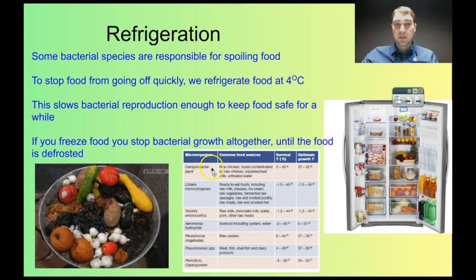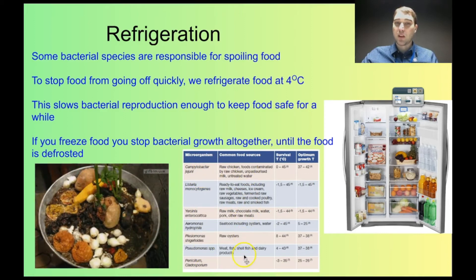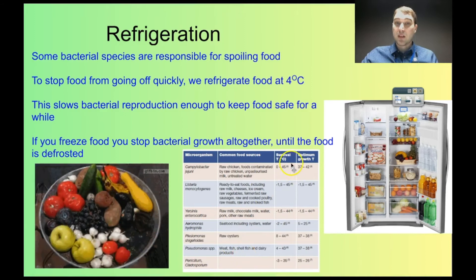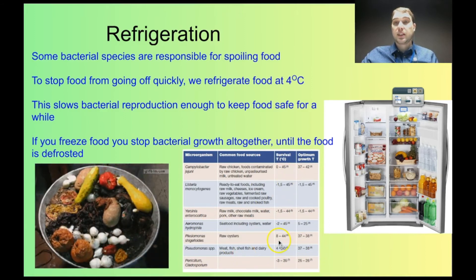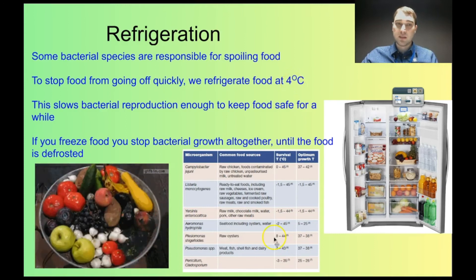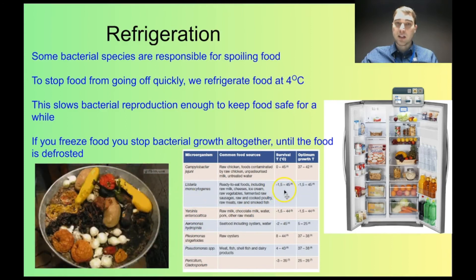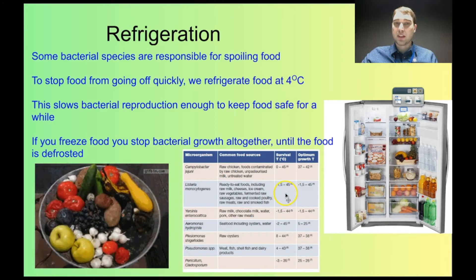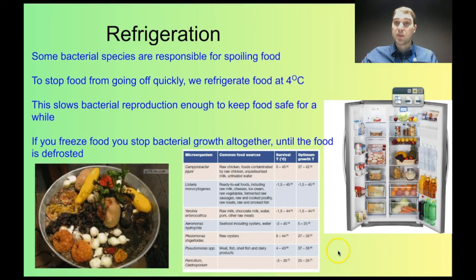This picture down here shows some different species of bacteria, different sources of food they're often found in, and also the temperature that they can survive in. This is where we can see that even cooling food down to four degrees isn't going to stop some bacterial species. If we look at this Listeria species, it can grow from minus one and a half degrees to 45 degrees Celsius — so if the fridge is at four degrees, the bacteria can still grow quite happily. This is why food will still go off even if it's been in the fridge for a little while.